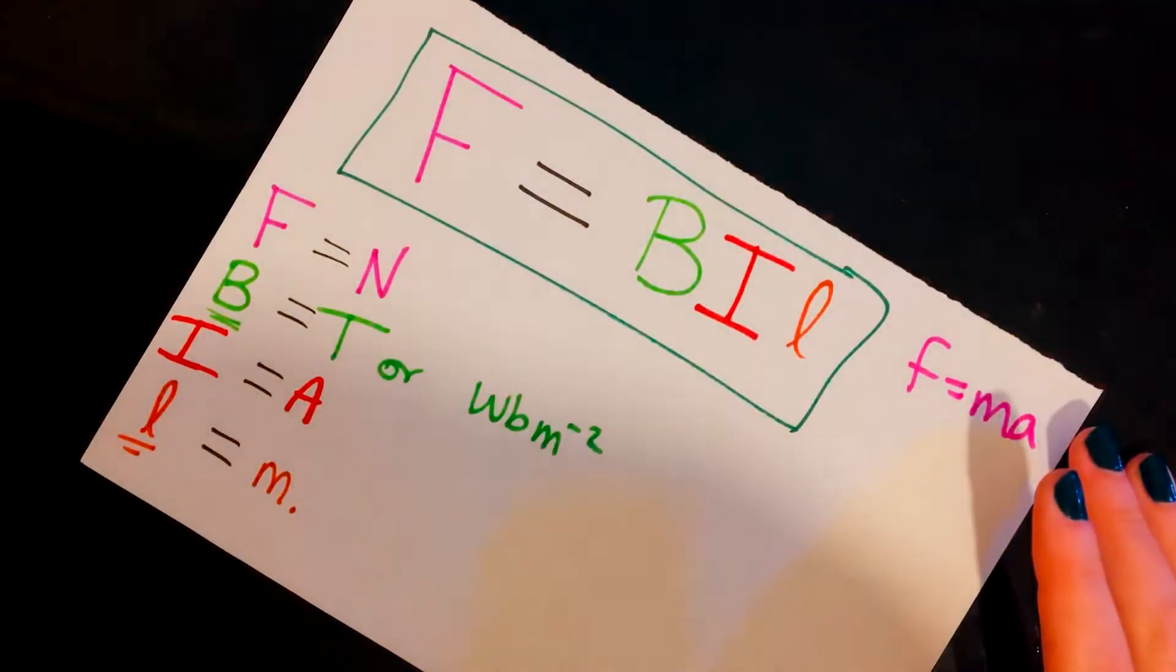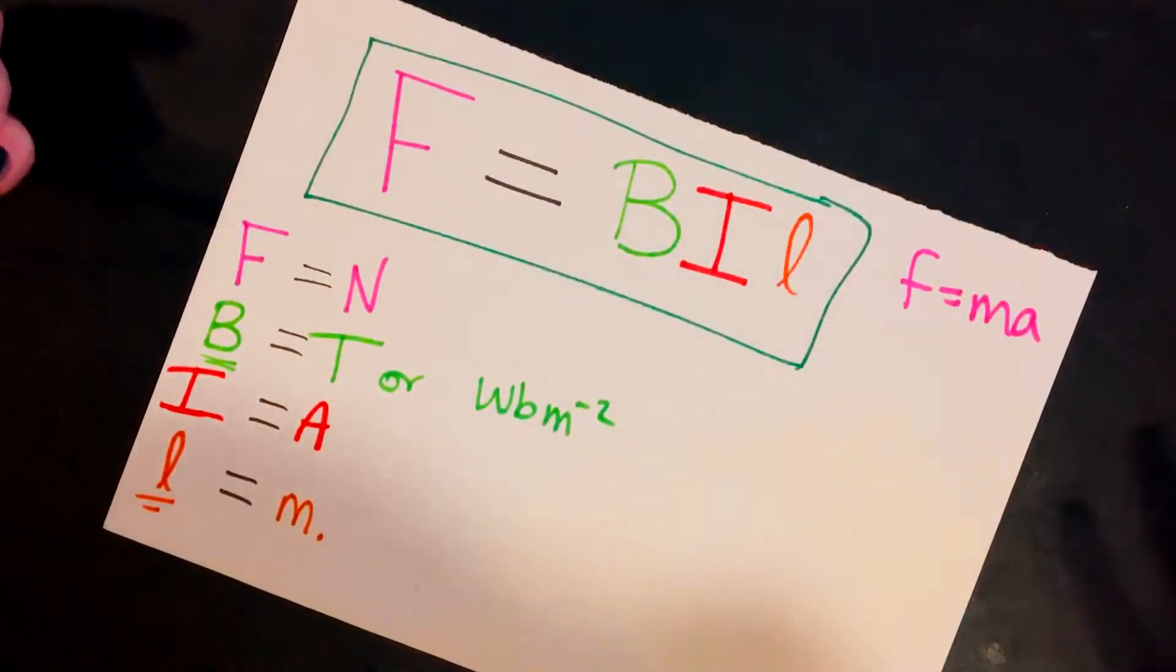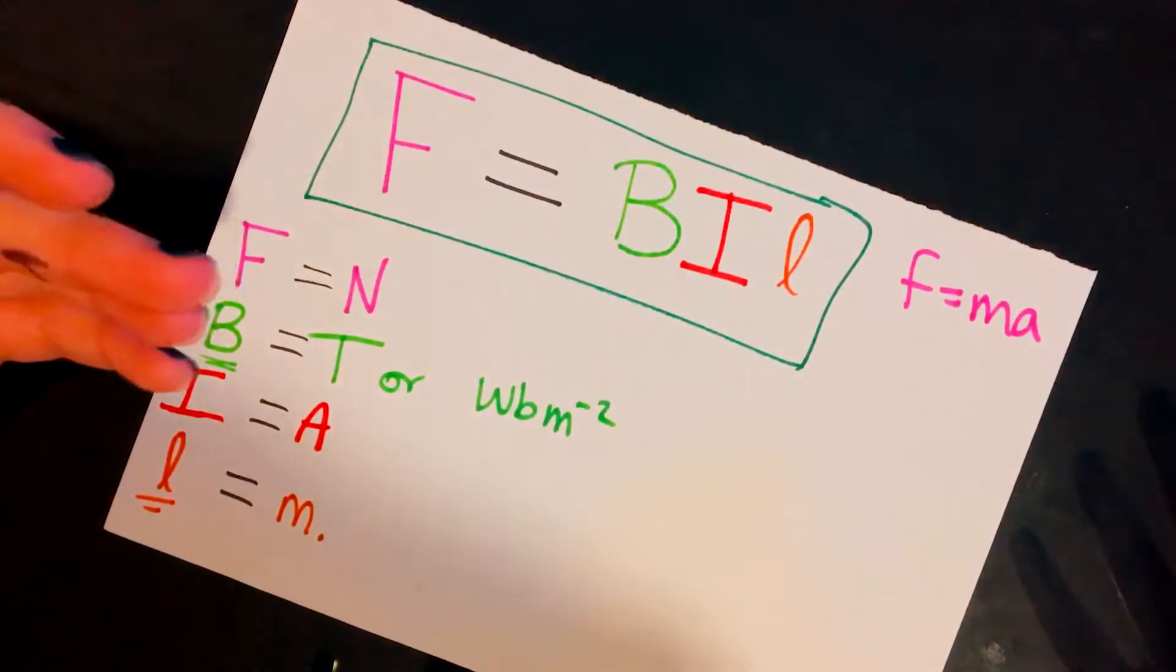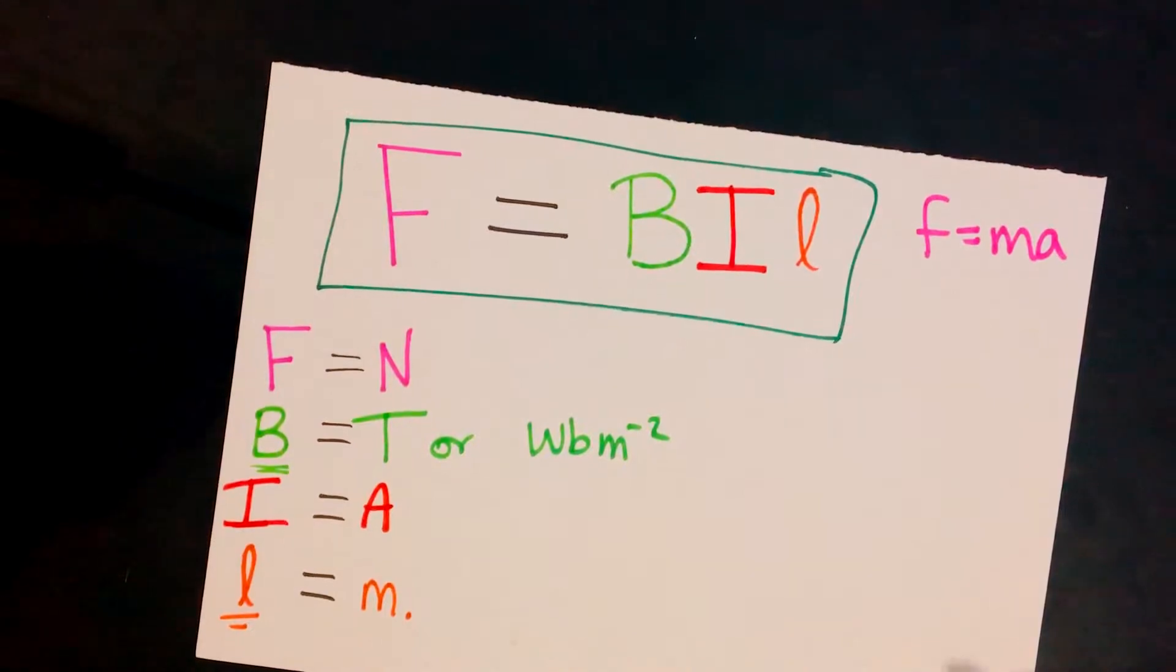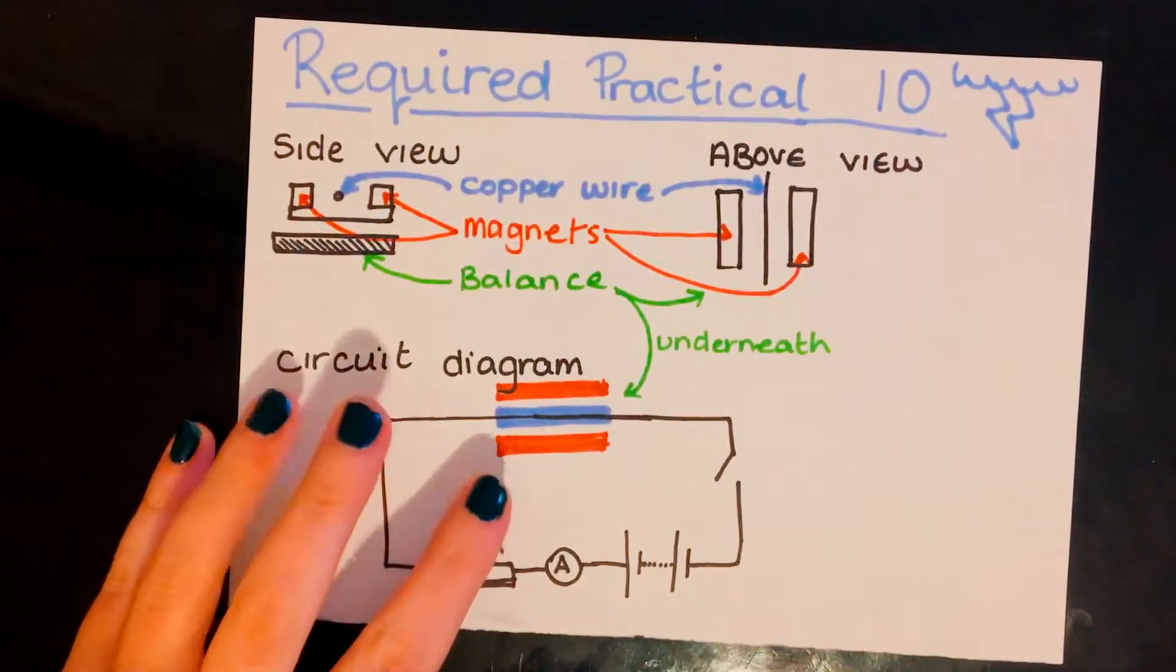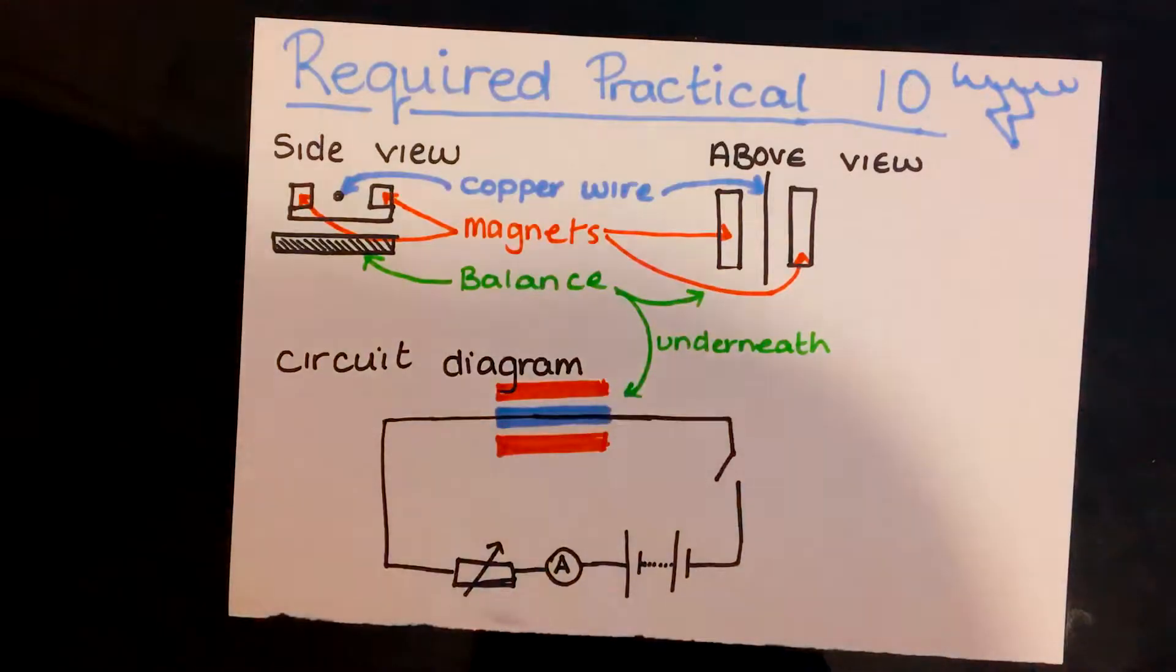I'm going to try and keep it color coordinated the whole way through. So F will stay purple, B will be green, I will be red, and L will try and be like a browny orange color for you guys.